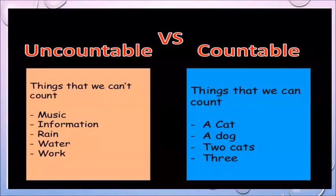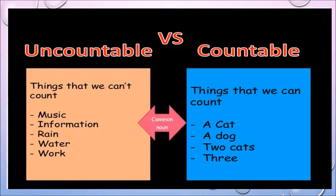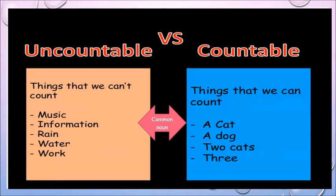Let's move on to countable and uncountable nouns. The first thing to remember is that countable and uncountable nouns are studied under the umbrella of common noun — we do not study proper nouns for countables and uncountables. I cannot say 'Pakistans' or 'Qaid-e-Azams' because proper nouns are one. Uncountable nouns, as the name suggests, are things that cannot be counted like one, two, three, a hundred or a thousand — for example: music, information, rain, water. These suggest the name of something but do not tell how many or what quantity is involved.